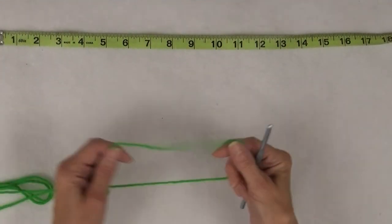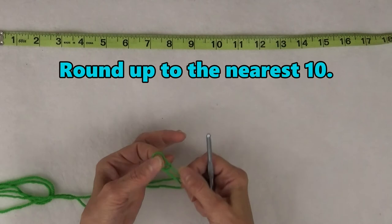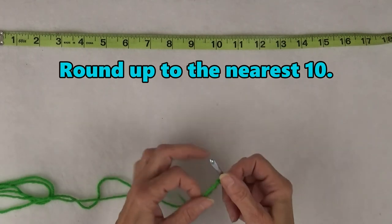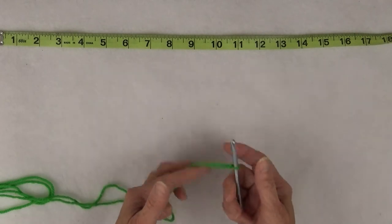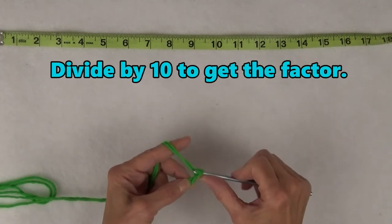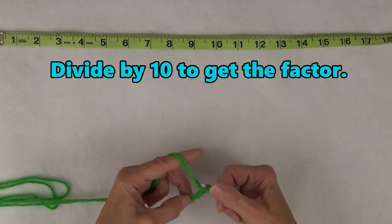To quickly estimate, round up the number of stitches in the foundation chain to the nearest ten. For example, if you need 24 stitches round up to 30, then divide by 10, which equals 3. This is the factor that you will use later.